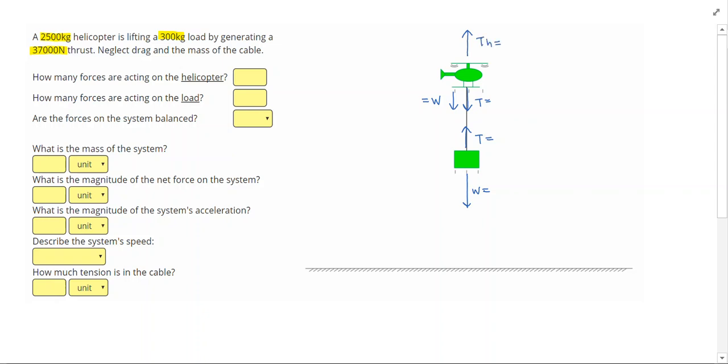So let's write down there are 3 forces acting on the helicopter and 2 forces acting on the load. If we know the masses, then we know the weights.